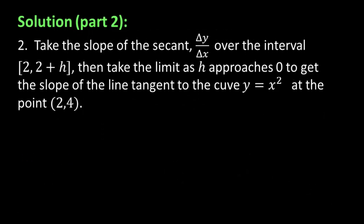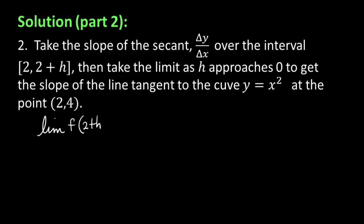Now, how do we take the slope of the line tangent to the curve at x equal to 2, where the y value is 4? What we do is take the slope of the secant line over the interval from 2 to 2 plus h, then take the limit as h approaches 0. It's just like the instantaneous speed. So let's go ahead and take the limit of f(2 + h) minus f(2), divided by (2 + h) minus 2, which is the same as h. We let h approach 0.